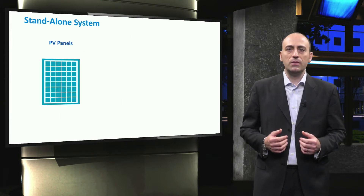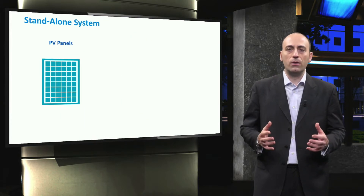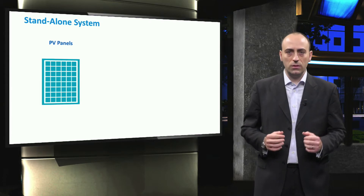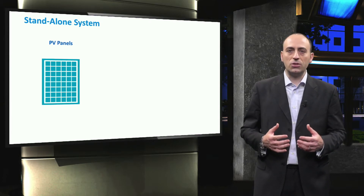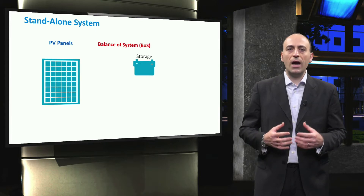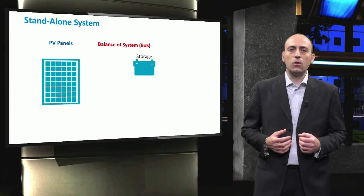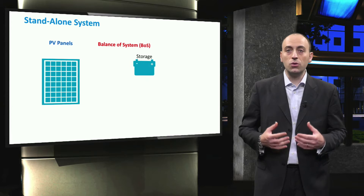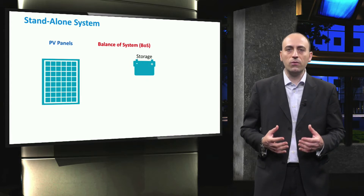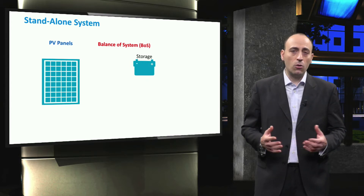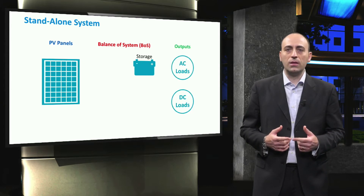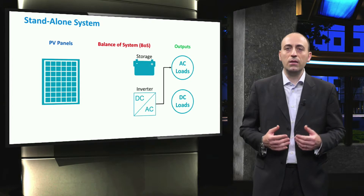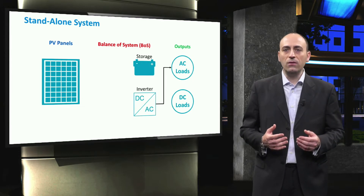A stand-alone PV system relies only on solar power, since it is not connected to the distribution grid. It contains a storage system, such as batteries, to store the unused solar energy. Stand-alone PV systems are usually installed in remote areas where the grid is absent. Typical components in a stand-alone PV system include the PV panels, both DC and AC loads, the inverter that is connected to the AC loads, and charge controllers.